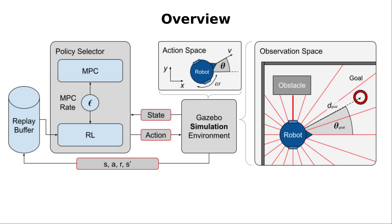The goal of our work is to show that model predictive control can be used as a general approach to provide demonstrations for the training of reinforcement learning agents in case of sparse rewards. The main idea of our approach is to switch between the MPC and the RL actions during training depending on the factor epsilon.